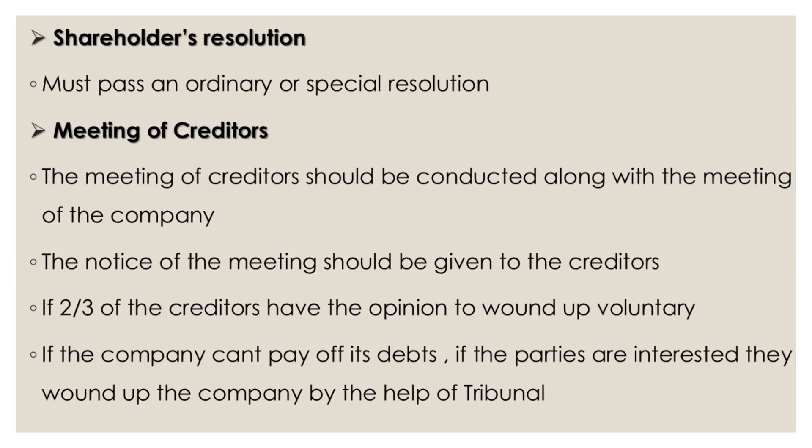Second condition is the shareholders' resolution for winding up. It may be an ordinary resolution or a special resolution. Third is the meeting of creditors, which should be conducted along with the meeting of the company. The notice should be given to the creditors before calling the meeting. The creditors can give their consent for winding up if two-thirds of the creditors have the opinion to wind up the company voluntarily. If the company has no assets to pay off its debts and companies are interested in winding up by tribunal, they can do that. These are all the conditions for voluntary winding up.